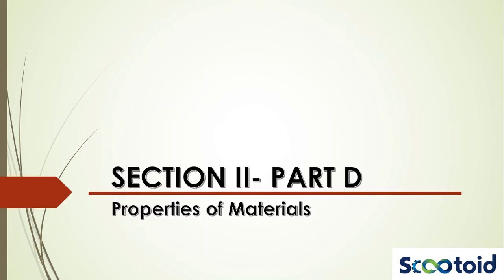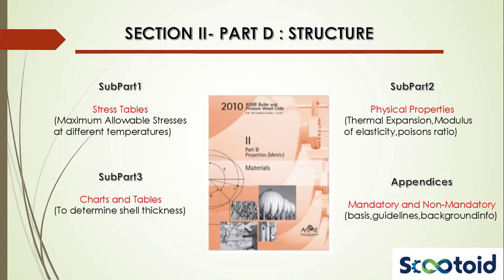Let's now move on to Section 2, Part D. Section 2 Part D of the ASME Boiler and Pressure Vessel Code covers the physical properties of the materials specified in Parts A and B. It is divided into these sections: Subpart 1 includes stress tables which give the maximum allowable stress for materials at different temperatures. The physical properties of these materials, such as thermal expansion, modulus of elasticity and Poisson's ratio, are found in Subpart 2. Subpart 3 provides charts and tables for determining shell thickness of components under external pressure. Mandatory and non-mandatory appendices provide the basis, guidelines, and background information for content in Subparts 1, 2 and 3.